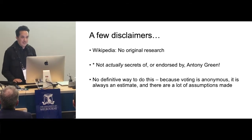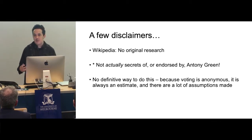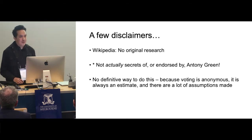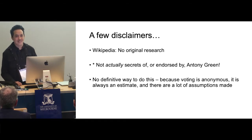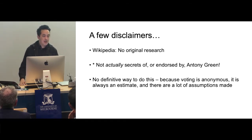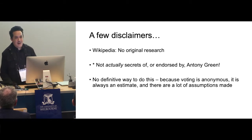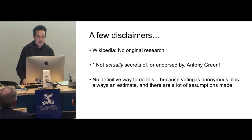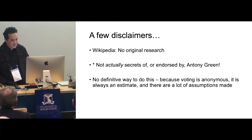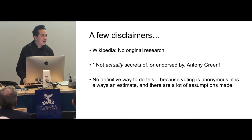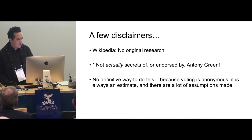First of all, as you heard I'm representing Wikimedia Australia. I submitted a proposal to do some workshops or presentations on Wikidata, so it's very much wiki related, and then I put this one in at the last minute and this was the one that was accepted. Wikipedia actually has a rule against original research and what I'm about to show you is the very definition of original research, so don't put it on Wikipedia. Luckily the aforementioned Anthony Green will do that and we can use his calculations on Wikipedia. This is not actually 'Secrets of Anthony Green' as I cheekily titled it and it's not endorsed by him — I just cheekily used his name as he's a bit of a hero of mine.